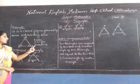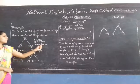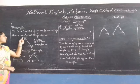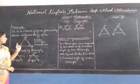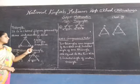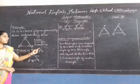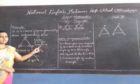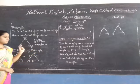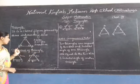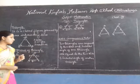A triangle also consists of three vertices — vertex A, vertex B, and vertex C. Now let's move on to congruency.